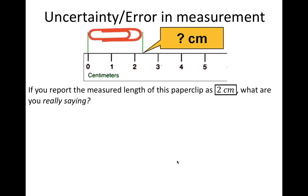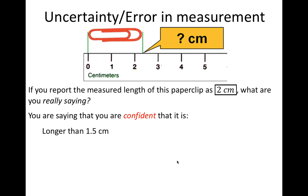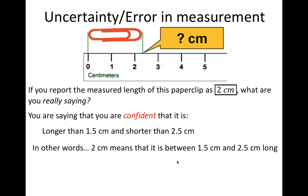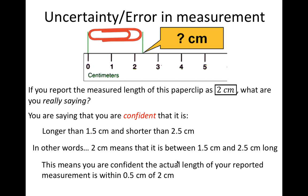If we claim the length of the paper clip is 2 centimeters, what are we really saying? We're confident the measurement is longer than 1.5 centimeters — if it were less, we'd report it as 1 centimeter — and shorter than 2.5 centimeters — if it were bigger, we'd report 3 centimeters. So a measurement of 2 centimeters means the actual length is somewhere between 1.5 and 2.5 centimeters, or we're within half a centimeter of 2 centimeters. That plus or minus half centimeter is referred to as the uncertainty in your measurement. Some people call this error, but I'll use the term uncertainty to mean our range of confidence in a measurement.